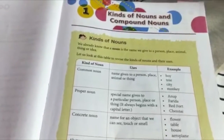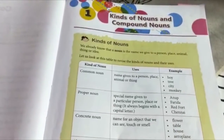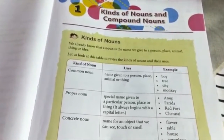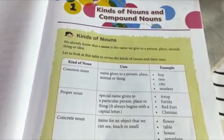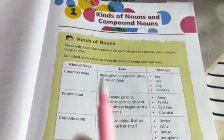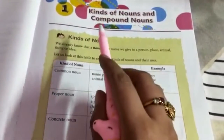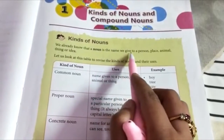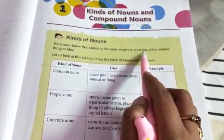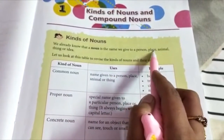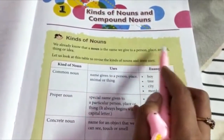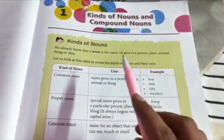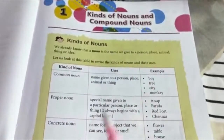Good morning. Today we are going to learn about kinds of nouns and compound nouns. As we already know, a noun is the name we give to a person, place, animal, thing or idea. Let's revise about kinds of nouns.